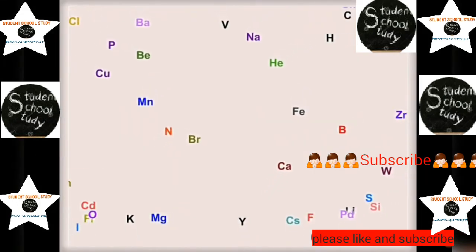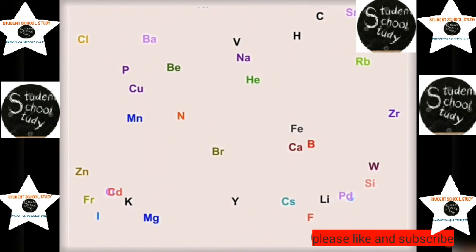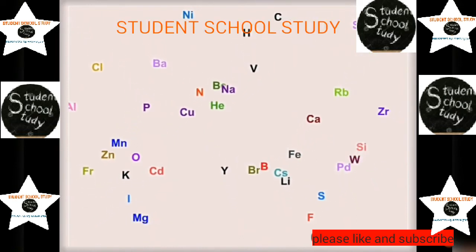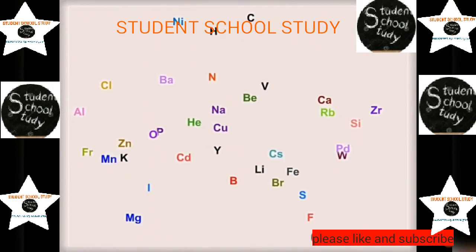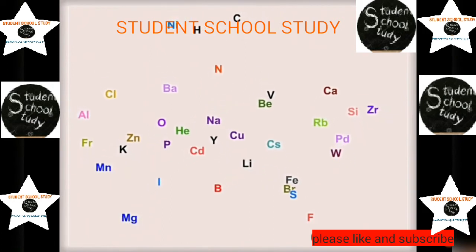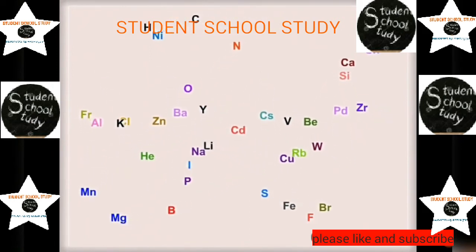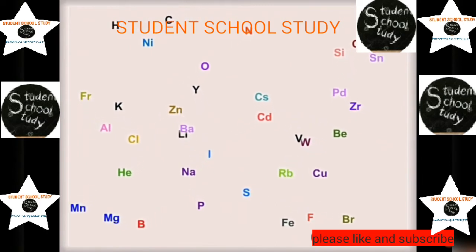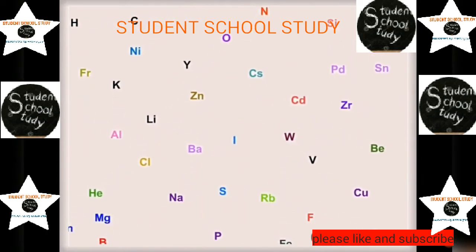As of now, we know about the existence of 118 elements. Most of them are found on the Earth either in free state or in combined state in the form of minerals. But the elements having atomic number greater than 92 are man-made.